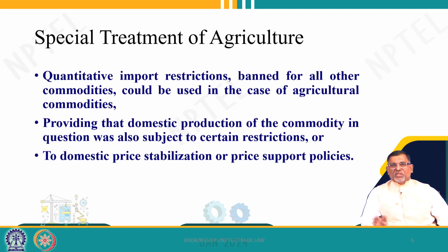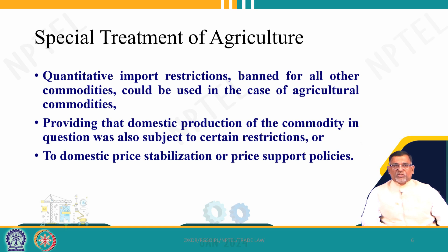Within GATT, agriculture was considered separately and got special treatment. Quantitative restrictions are banned or restricted in all other agreements, but in agriculture commodities they received a more liberal treatment. Also, restrictions on domestic production were removed, while domestic price stabilization and price support policies were continued. For example, the MSP — the Minimum Support Price scheme in India — is very popular for certain products and includes the price support policies of the government.